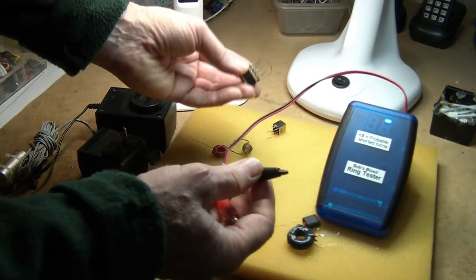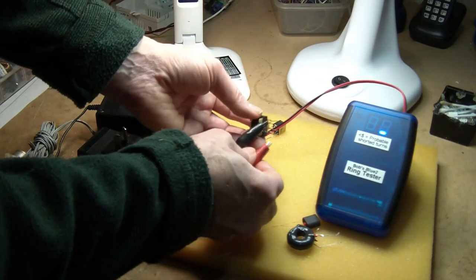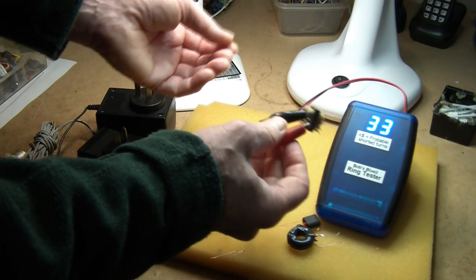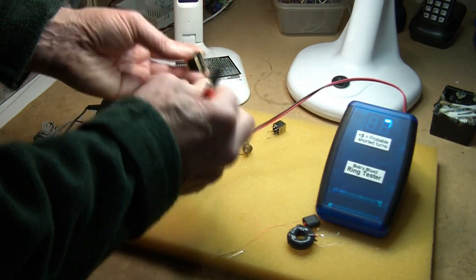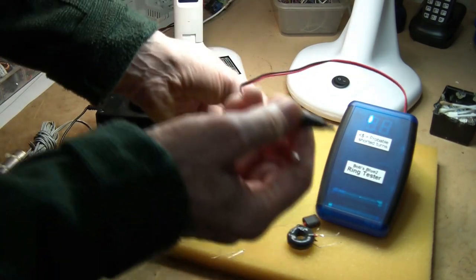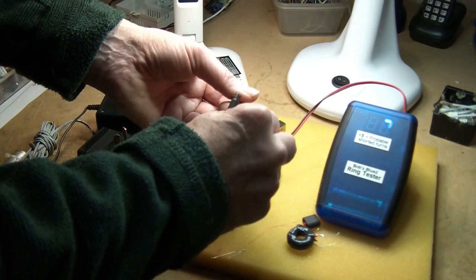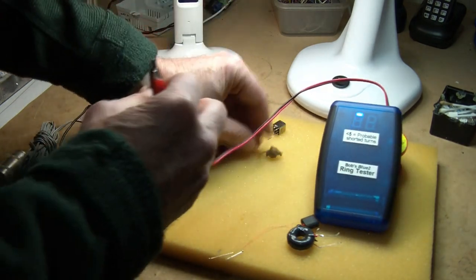Here's a transformer out of an old electronic flash gun, little ferrite core transformer. Its Q is very high as you can see. And a little old RF choke out of something. 15.